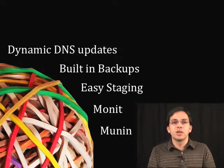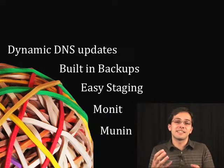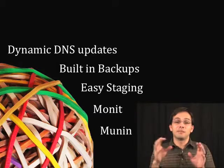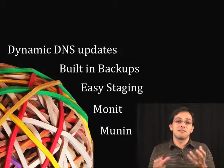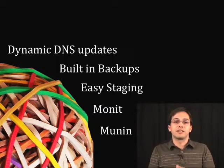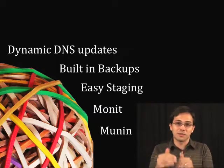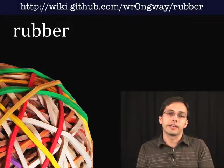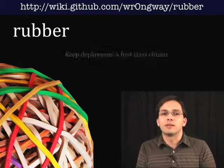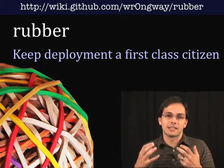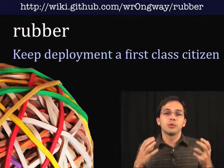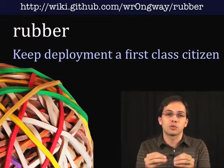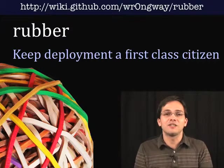Rubber also comes with Munin built in, which is continuously collecting statistics on the health of all of your different components on your cluster. It gives you an admin box you can log into and see how your servers are doing — whether they're using all their CPU, whether they're maxing out — so you can quickly diagnose problems. One reason why I really dig Rubber is that it keeps deployment a first-class citizen. All of your configuration to deploy to the cloud sits right there in your Rails application in source control — it just feels good to have it right there at your fingertips.